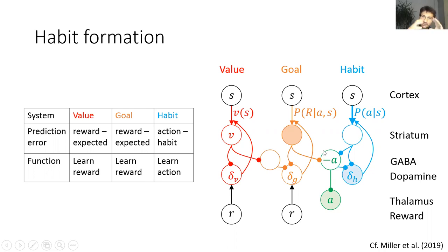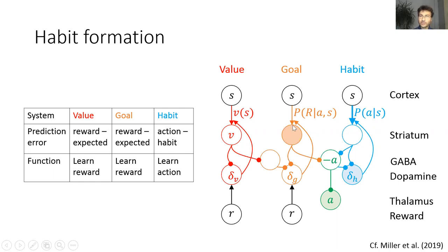In the evaluation and goal-directed systems, prediction errors drive reinforcement learning. In the habit system, they drive learning of which action to perform in a given state — and in particular, movement-responsive dopaminergic neurons drive habit formation. At the beginning, actions are mainly selected through input from the goal-directed system. This action then triggers a prediction error in the habit system because the action was performed while the habit system had not yet learned to predict it. This prediction error triggers plasticity in the habit system, so it can predict and produce this action in the future — learning to mimic the goal-directed system.